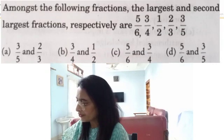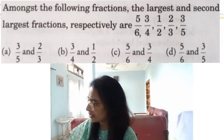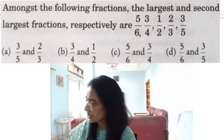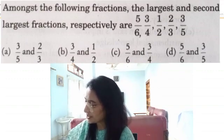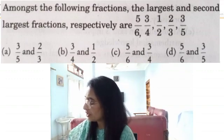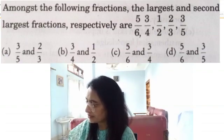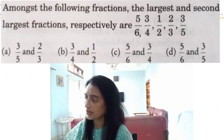Amongst the following fractions, the largest and second largest fractions respectively are: 5/6, 3/4, 1/2, 2/3, 3/5. The options are: 3/5 and 2/3; 3/4 and 1/2; 5/6 and 3/4; 5/6 and 3/5.